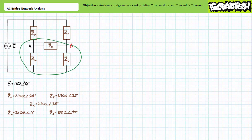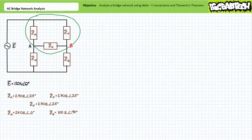One could convert the delta configuration of ZX, ZQ, and ZN into a Y, or the delta configuration of ZM, ZP, and ZX into a Y — either would result in a simple series-parallel circuit. Notably, impedance elements ZM, ZP, and ZX are identical. This is a balanced delta configuration, and converting to a balanced Y configuration is the easiest of tasks.